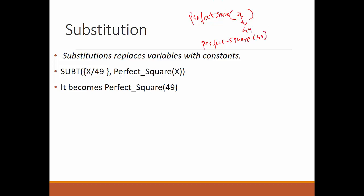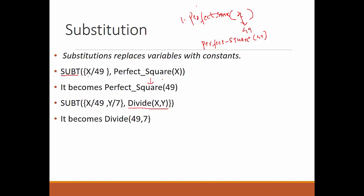All the steps taken in replacing x with 49 are represented in a specific syntax, showing that we have substituted 49 for x, and it became 'perfect square(49).' Similarly, if we replace x with 49 and y with 7, the expression 'divide(x, y)' becomes 'divide(49, 7).'